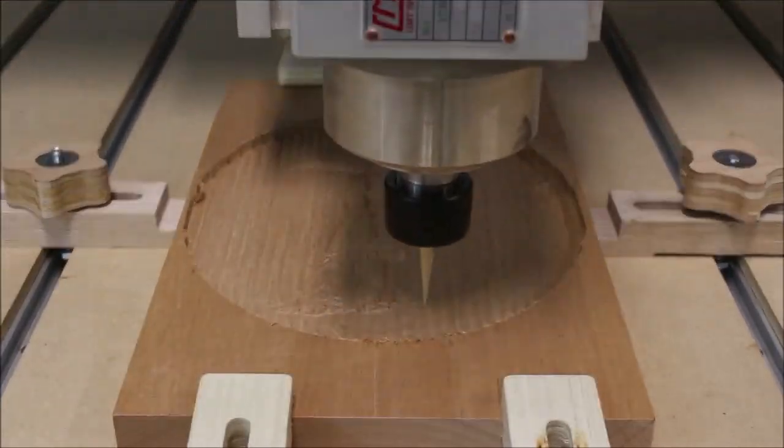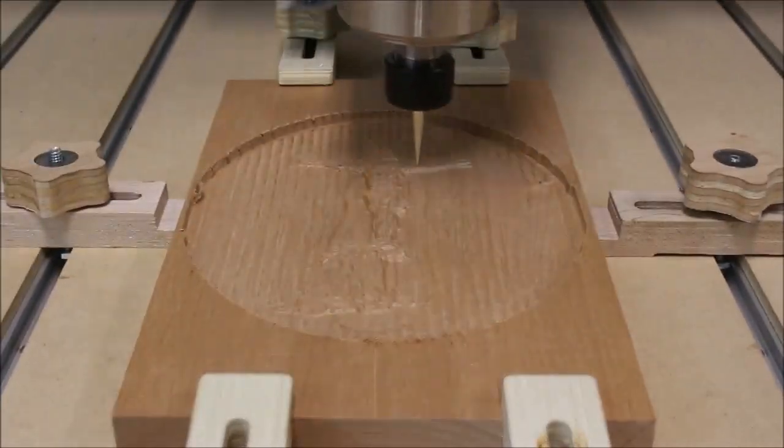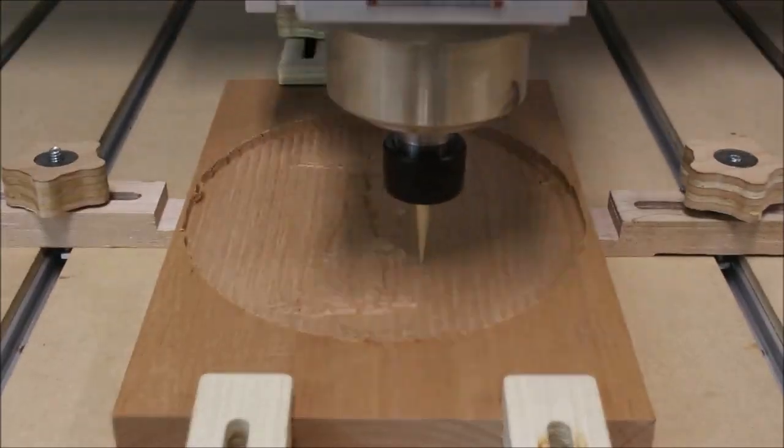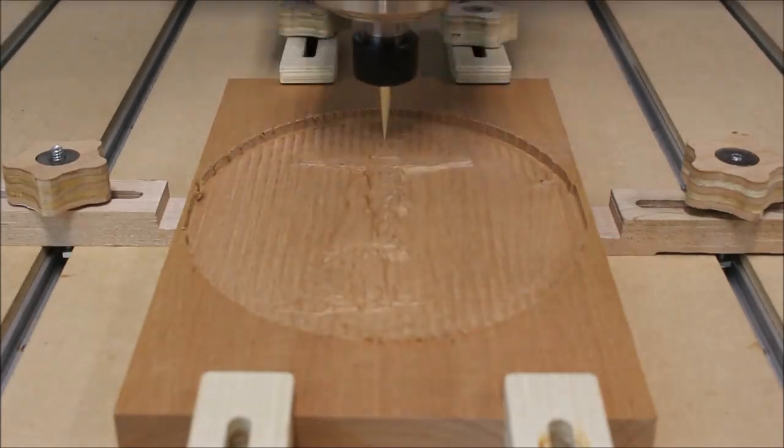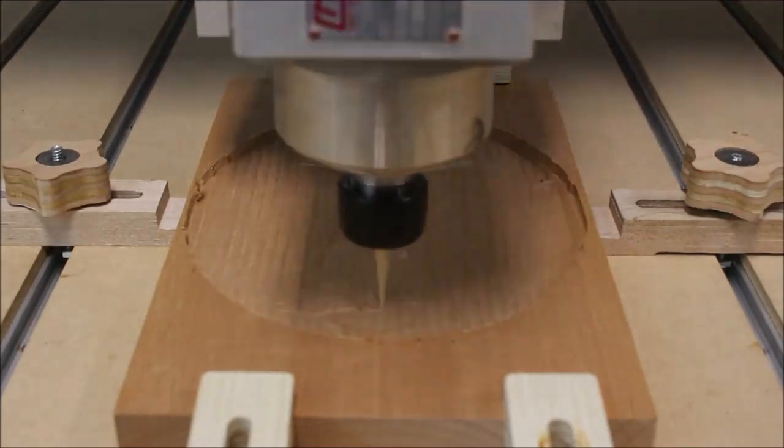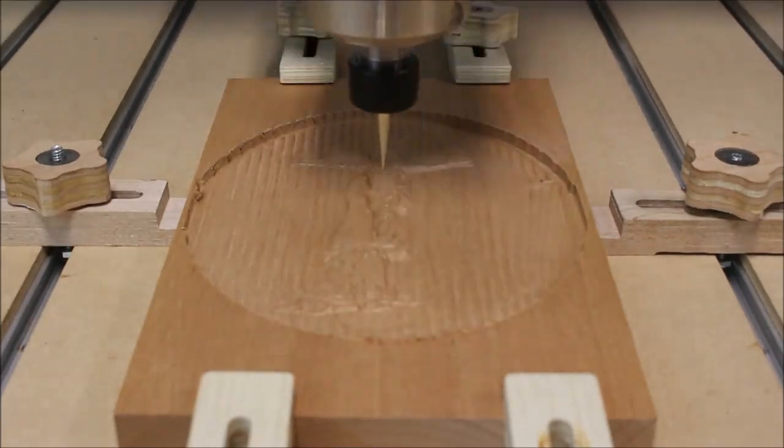The tapered ball nose has a radius of 1/64, so it's really pointy and brings out some of the detail when you're doing something really small like this.